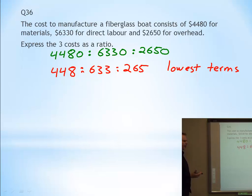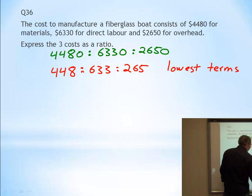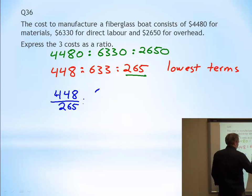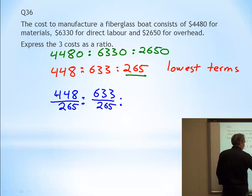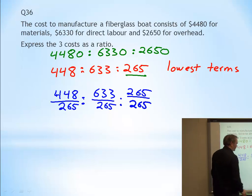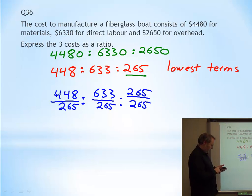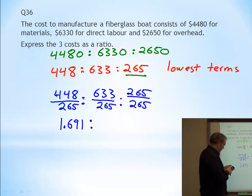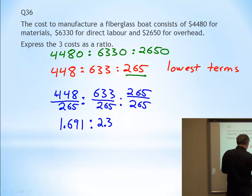Well, we can also do this in an equivalent ratio. It's an equivalent. We're just, again, going to find the smallest one. Find the smallest one to be that. So here we're going to say 448 over 265, 633 to 265, and 265 to 265. Again, go to our calculator. Calculate it out. 448 divided by 265, 1.691. I'll do three decimal places. 633 divided by 265, 2.389. And this is going to be 1.